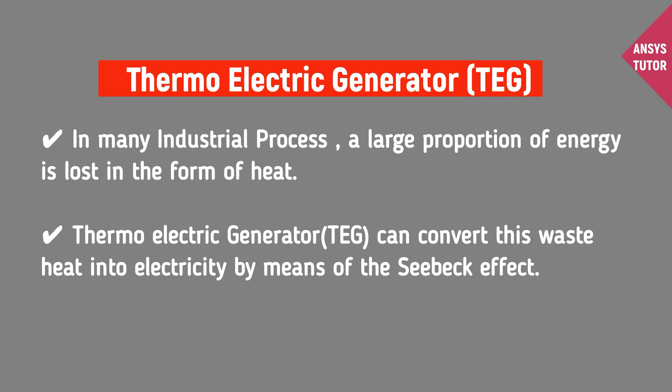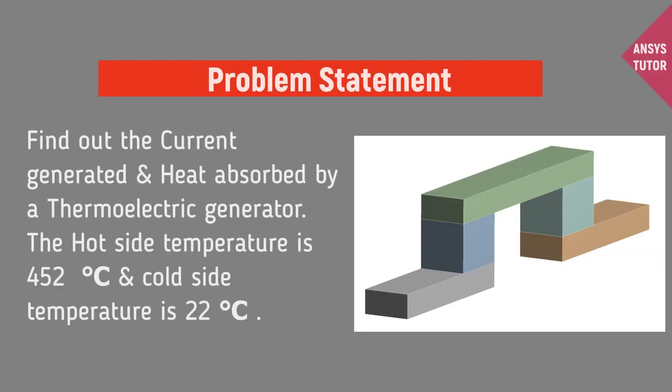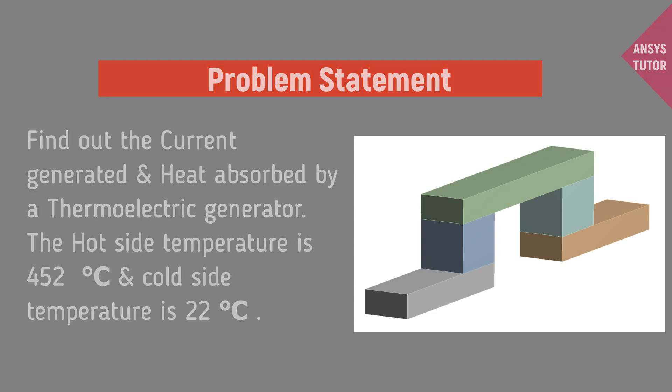In industries, a large proportion of energy is lost in the form of heat. Thermoelectric generators can convert this waste heat into electricity by means of the Seebeck effect. In this demonstration, the TEG hot face is at a temperature of 452 degrees Celsius and the cold face temperature is 22 degrees Celsius. Find out the current generated in this process.